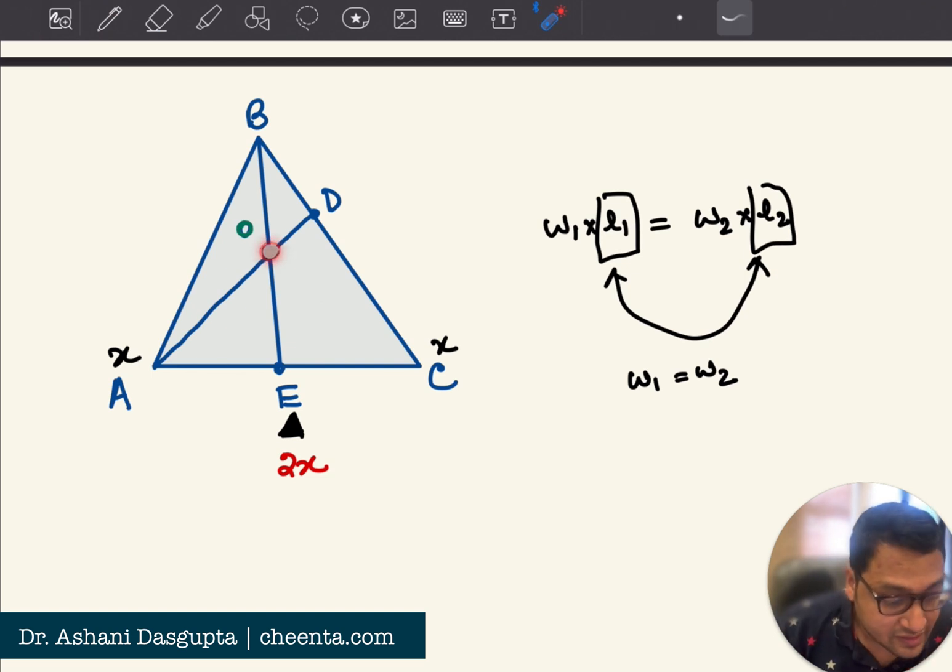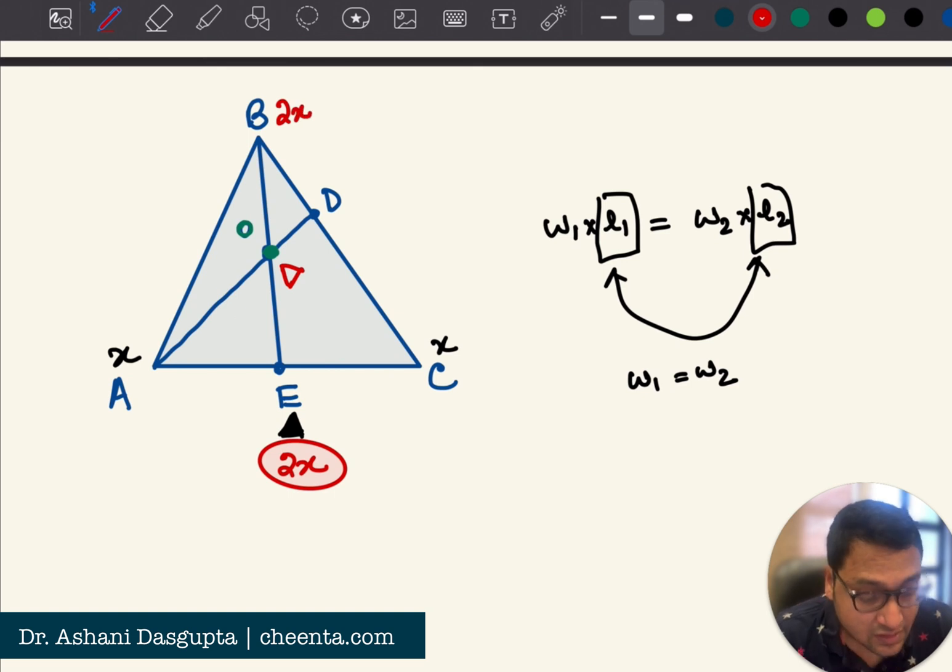So, the point O, now think about the fulcrum at the point O. The point O is the midpoint, the point O is the midpoint of BE. So if this one is 2x, then the weight at B must also be 2x to make sure that that particular segment is balanced about O.